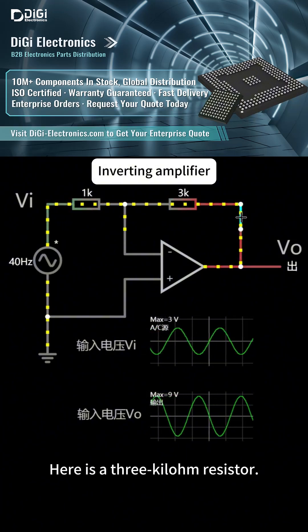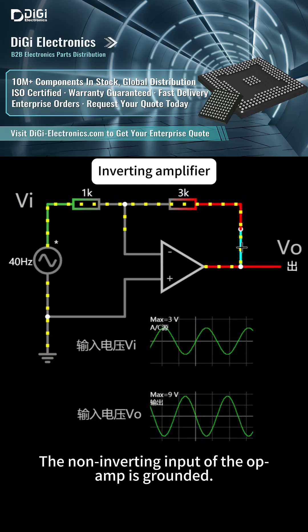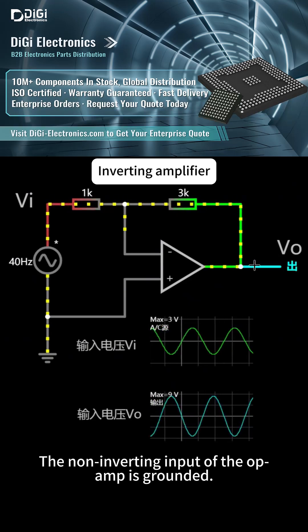Here is a 3 kilohm resistor. The non-inverting input of the op-amp is grounded.